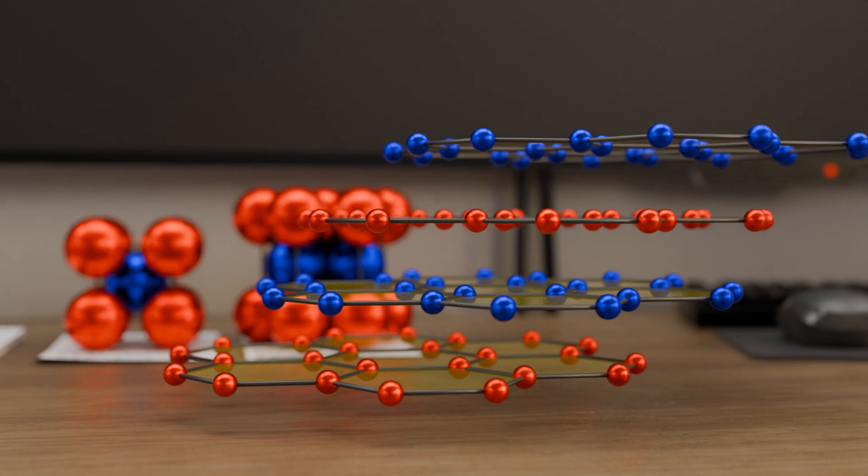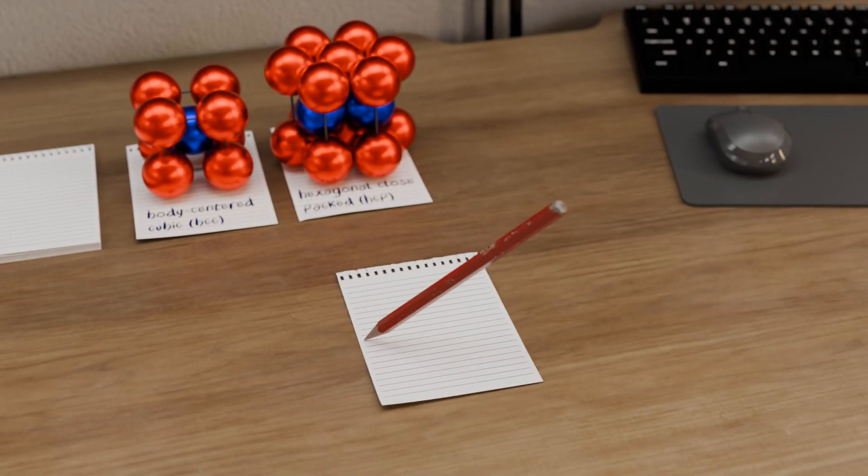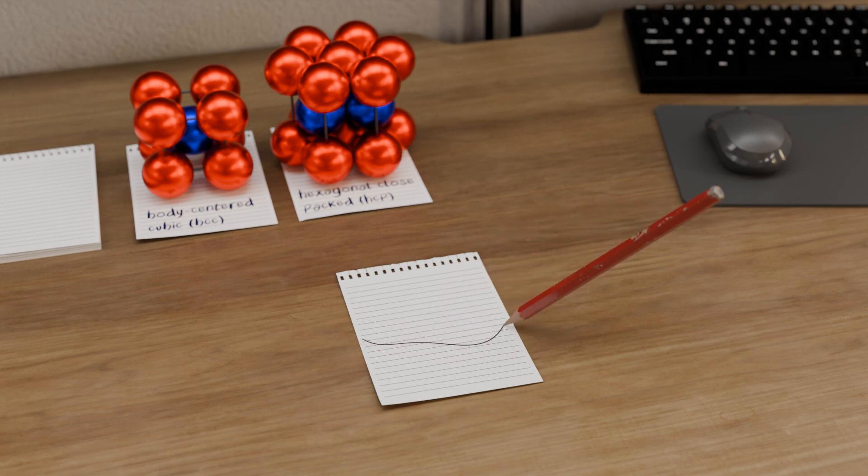This process takes place, for example, when drawing with a pencil on a sheet of paper. The graphite layers come off and stick to the structure of the paper.